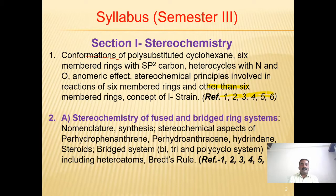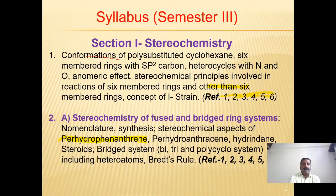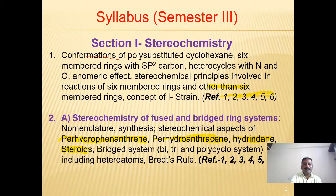Chapter 2 is divided into two parts. Part A is the stereochemistry of fused and bridged ring systems, covering nomenclature, synthesis, and stereochemical aspects of perhydrophenanthrene, perhydroanthracene, hydrindane, steroids, and bridged systems including bi-, tri-, and polycyclic systems with heteroatoms. The last topic in this part is Bredt's rule.